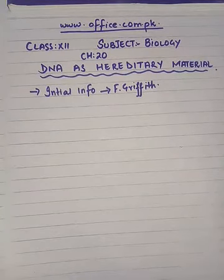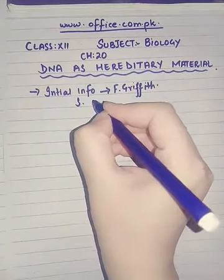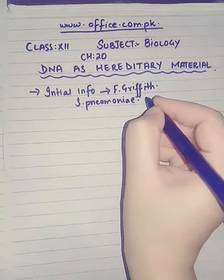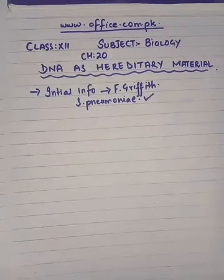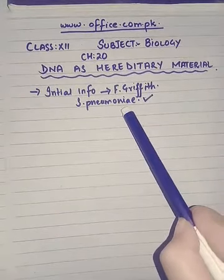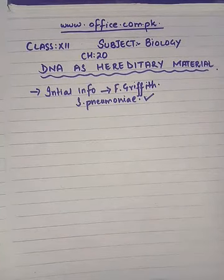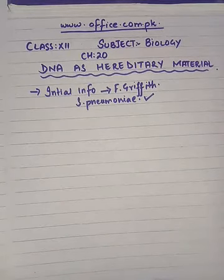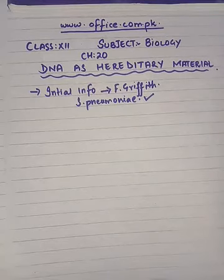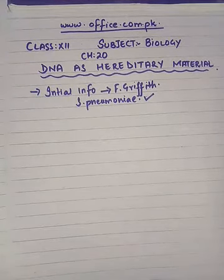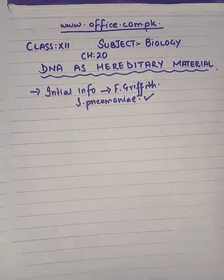Frederick Griffith was performing some experiments with the bacteria Streptococcus pneumoniae, also known as Pneumococcus bacteria. This bacteria is responsible for causing pneumonia in human beings as well as in animals. While working on this bacteria, he made some observations during his experiments. In addition to his actual intentions, he also made other observations which were recorded, and different theories were developed based on those observations.